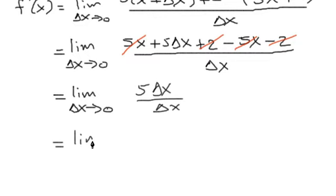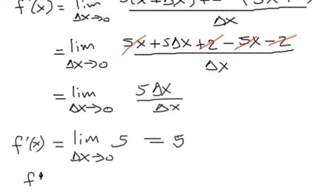We have the limit as delta x approaches zero. Now these delta x's can cancel out and we'll just end up, all that stuff collapses down to 5. And the limit of a constant is just the constant. So the limit of 5 as delta x approaches zero is just going to be 5. So f prime of x is equal to 5.